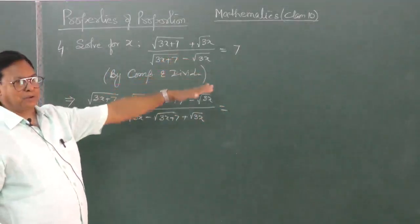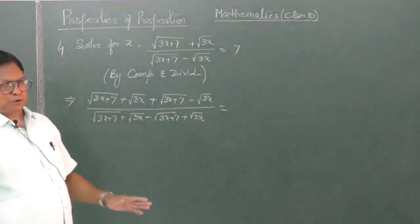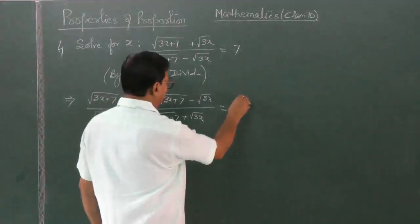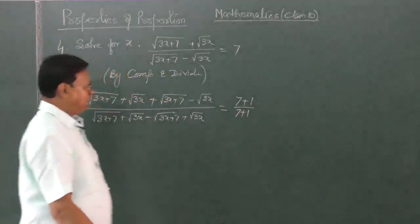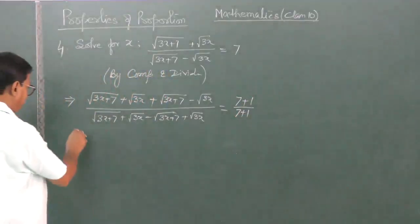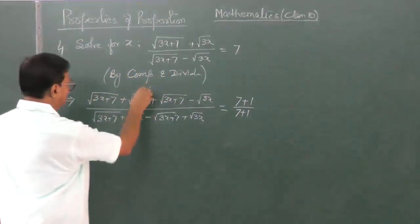Now, on the right hand side there is no denominator. So when there is no denominator, it is understood the denominator is 1. So plus 1, 7 plus 1, 7 minus 1. So this cancels.